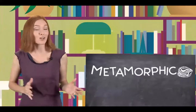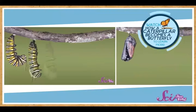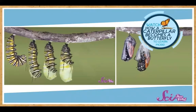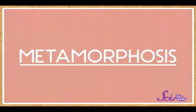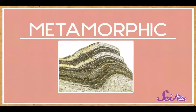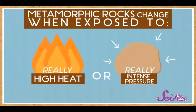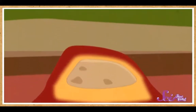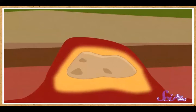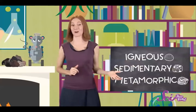Finally, metamorphic rocks are rocks that have gone through a big change. Remember when we talked about caterpillars turning into butterflies? That process is called metamorphosis, which just means changing shape. That's exactly what metamorphic rocks have done — they change when exposed to really high heat, really intense pressure, or sometimes both. This usually happens deep within the earth, where rocks can get squished, bent, and folded, but not melted.